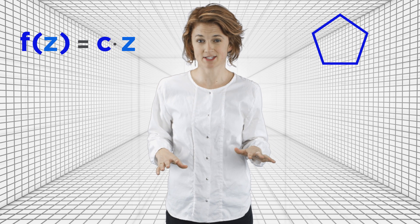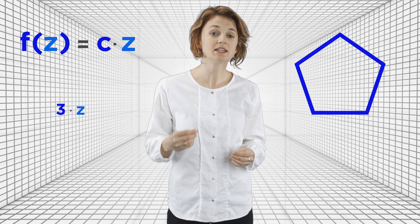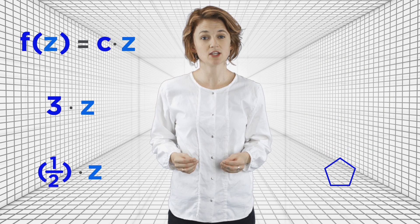We can make a pantograph associated with the function c times z for any real number c. For example, if c equals 3, it scales everything by 3, making our shapes three times as large. Or if c equals 1 half, it shrinks them in half like this.